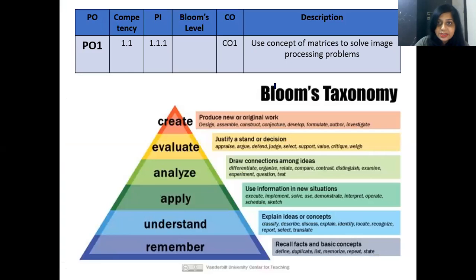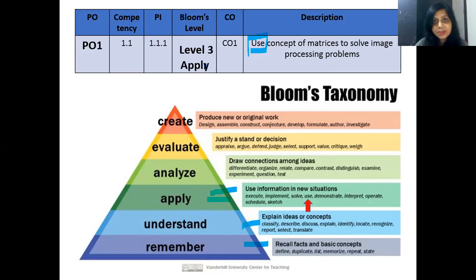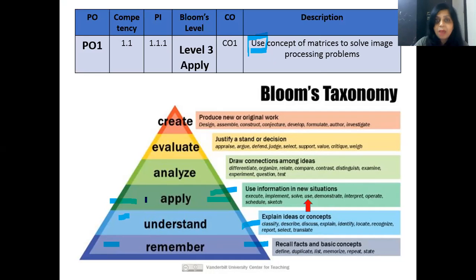Now for Bloom's taxonomy — the levels are remember, understand, apply, analyze, evaluate and create, each with associated action verbs. In CO1, I used the word 'use.' This word falls in the third level of Bloom's taxonomy. Hence, module 1 attains Bloom's taxonomy level 3, which is the application level. In some subjects it may achieve remember or understand level, but since my subject is application oriented, it starts at application level.